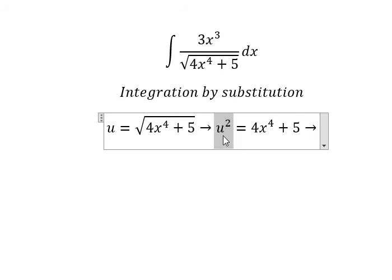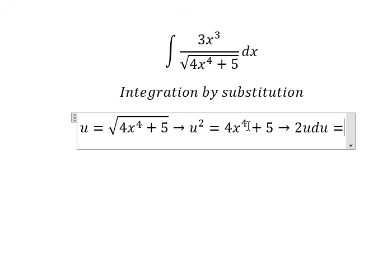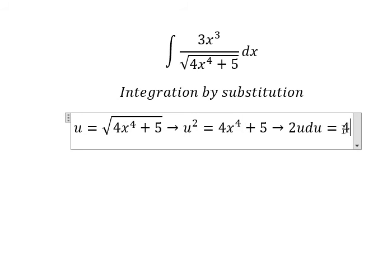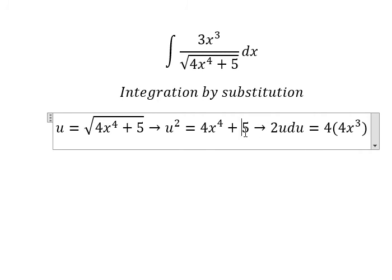First, the differential of u squared, we have 2u. This one, we have 4x to the power of 3. This one, that is the constant, so you got 0.